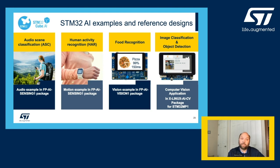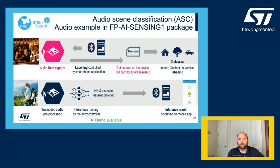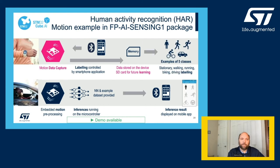The audio scene classification is an audio example of the AI Sensing 1 package, which can classify three scenes using a microphone: indoor, outdoor, and in-vehicle. In the same FP AI Sensing 1 package, there's also a motion example — the human activity recognition — that can recognize five different motion activities using a motion MEMS sensor. They are stationary, walking, running, biking, and driving.